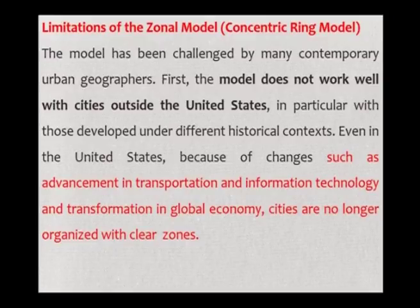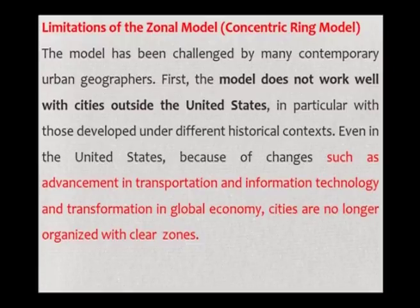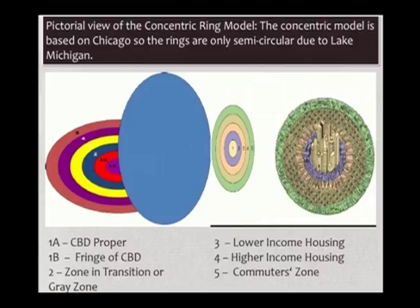Assumptions of the concentric ring model include: an isotropic plane where transportation is equally cheap; land near the center is of higher value than suburban land; building age increases as one moves into the city center; there exists a well-defined separation either ethnically or economically; those who can afford transport live away from the center; and there is no concentration of heavy industries. Limitations include: the model does not work well with cities outside the United States, particularly those developed under different historical contexts. Even within the US, because of advancement in transportation and IT technology and transformation in the global economy, cities are no longer organized with such clear zones.